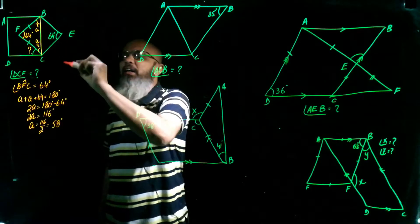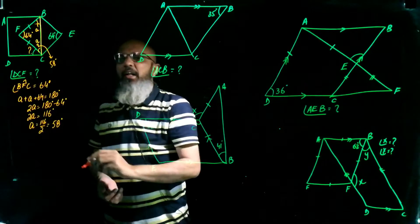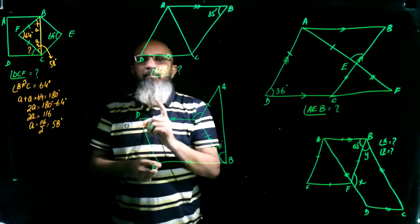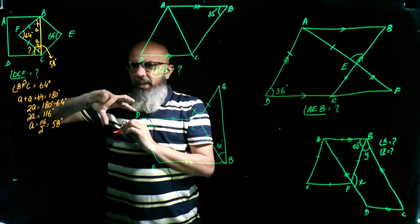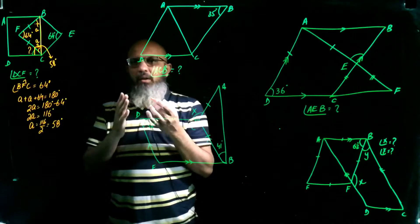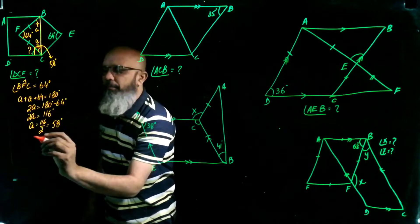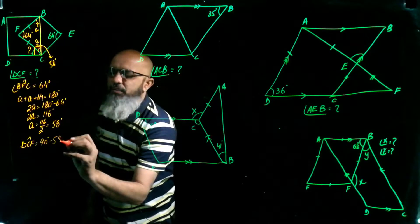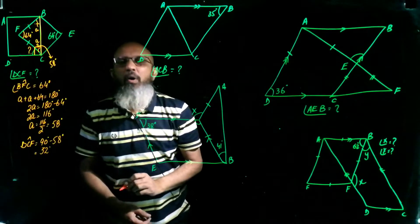These two angles are 58 degrees each. Since ABCD is a square, each angle is a right angle (90 degrees). The unknown angle DCF is the remainder: angle DCF = 90 - 58 = 32 degrees. That is your required answer.